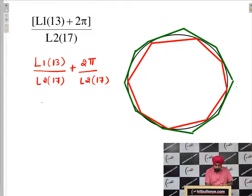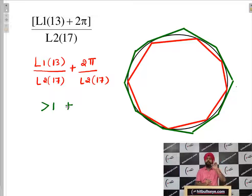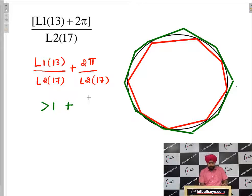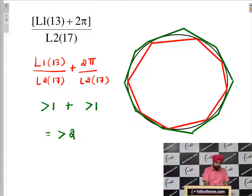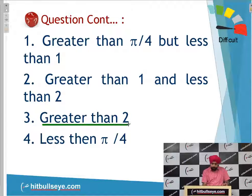So irrespective of the number of sides, in this fraction the numerator is greater than the circle's circumference and the denominator is less, so this fraction will be greater than 1. Similarly, since the radius is 1, 2π is the circumference of the circle, and L2_17 is something inside, so even that fraction will be greater than 1. If you add the two, you can say this will be greater than 2 — so the answer is greater than 2.